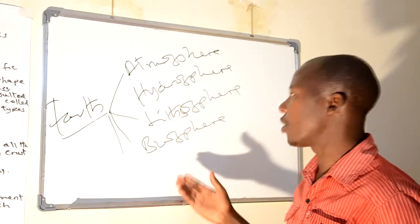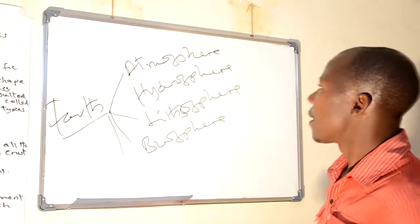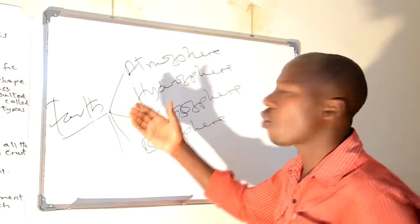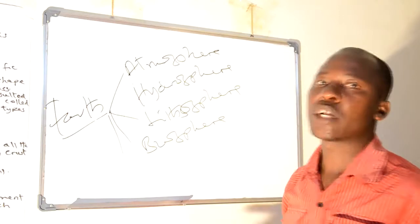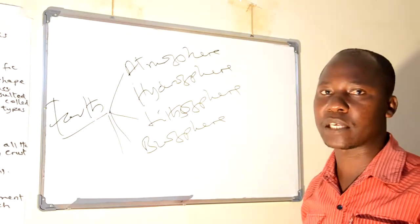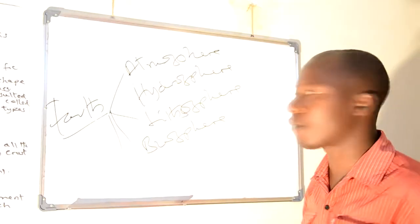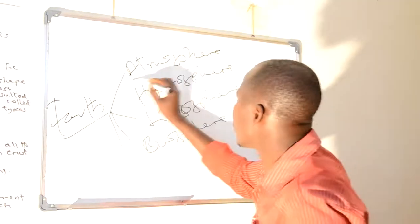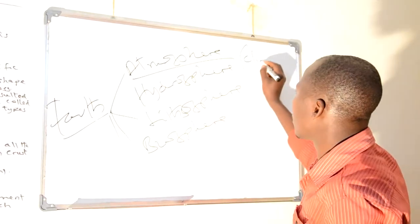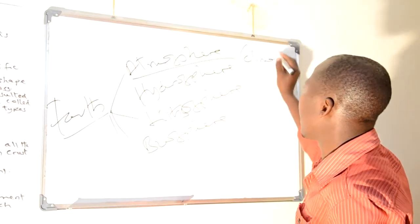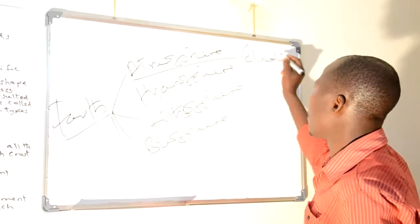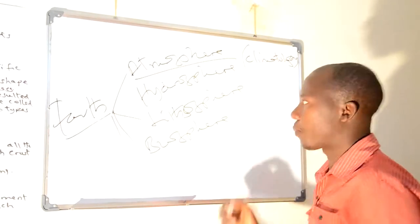Even in form one we learned these things. The atmosphere is the organized defense of gases held up by gravitational forces, and the topic at the advanced level is called climatology. I think we learned about this topic together.